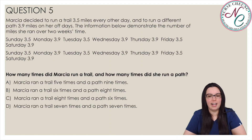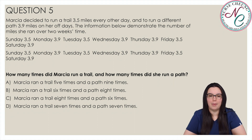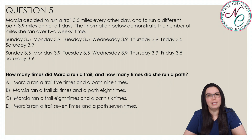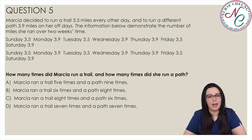Marcia decided to run a trail 3.5 miles every other day and to run a different path 3.9 miles on her days off. The information below demonstrates the number of miles she ran over two weeks' time: Sunday 3.5, Monday 3.9, Tuesday 3.5, Wednesday 3.9, Thursday 3.9, Friday 3.5, Saturday 3.9.